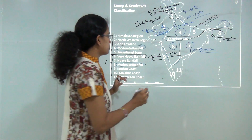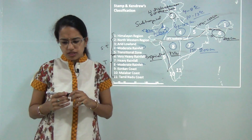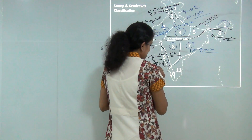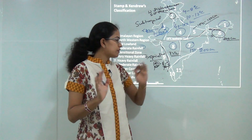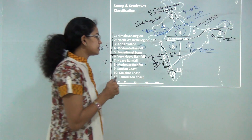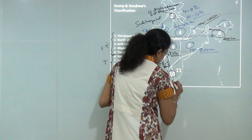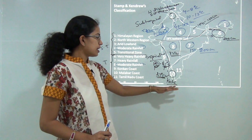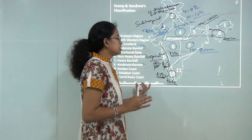Region 9 is the Konkan coast — the western parts of Maharashtra and Karnataka — with temperature varying from 24 to 27 degrees Celsius, showing little variation. Region 10 is the Malabar coast, covering most of Kerala, with an annual temperature of around 27 degrees Celsius and very little temperature variation. This region runs from Goa to Cape Comorin, classified based on Kochi, with very stable temperatures throughout the year.